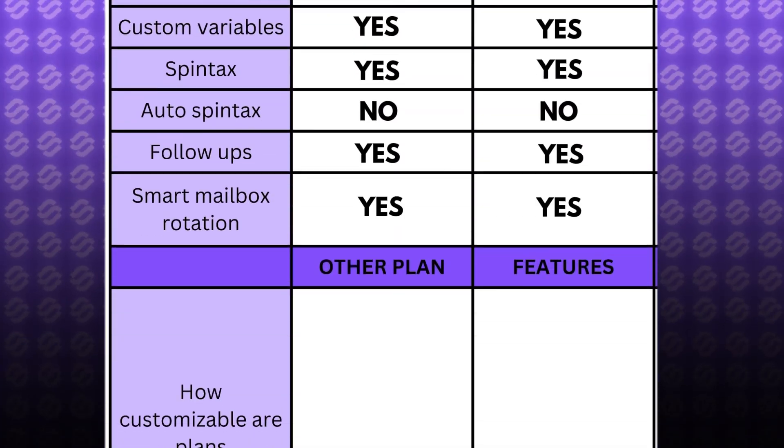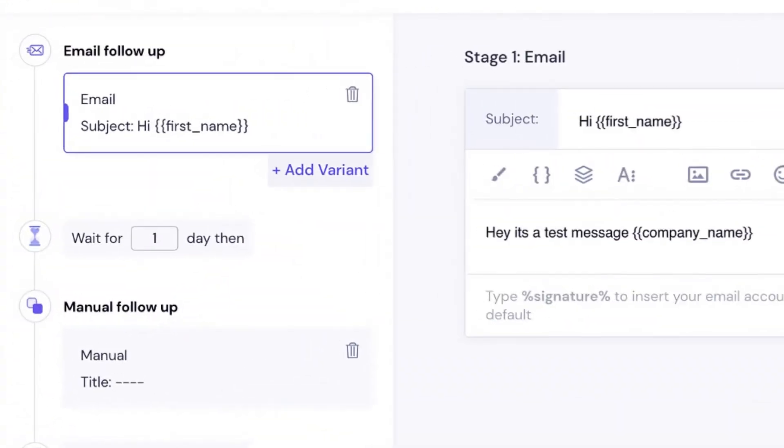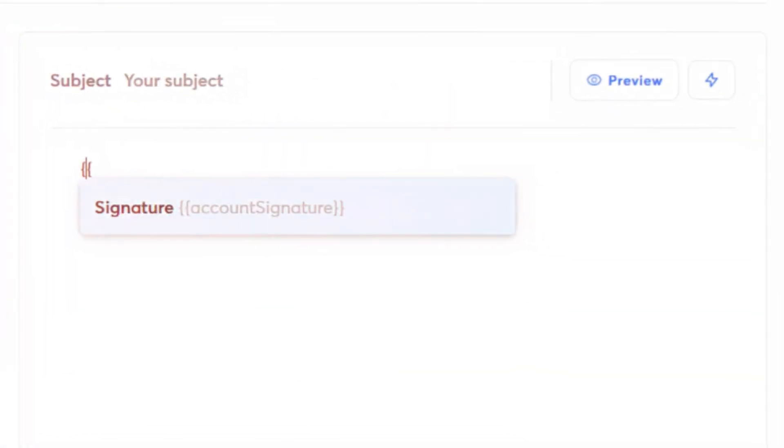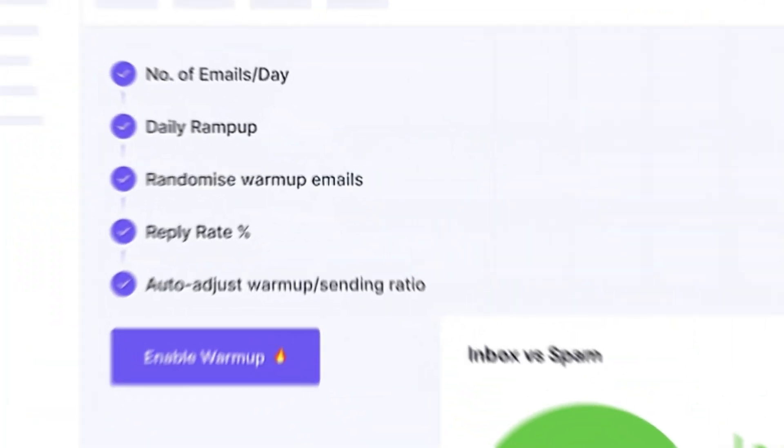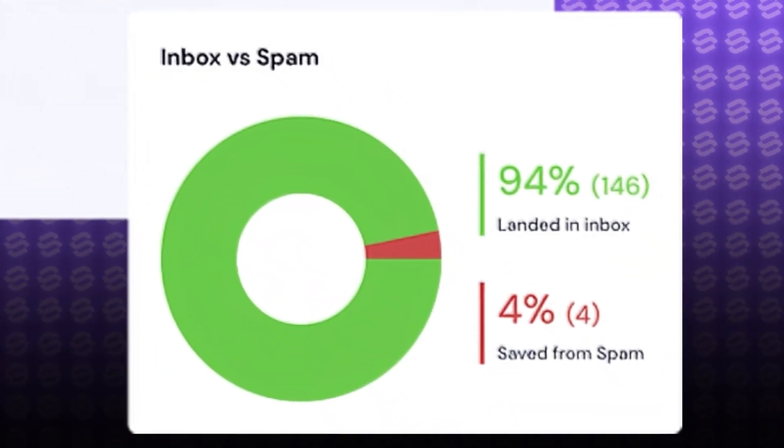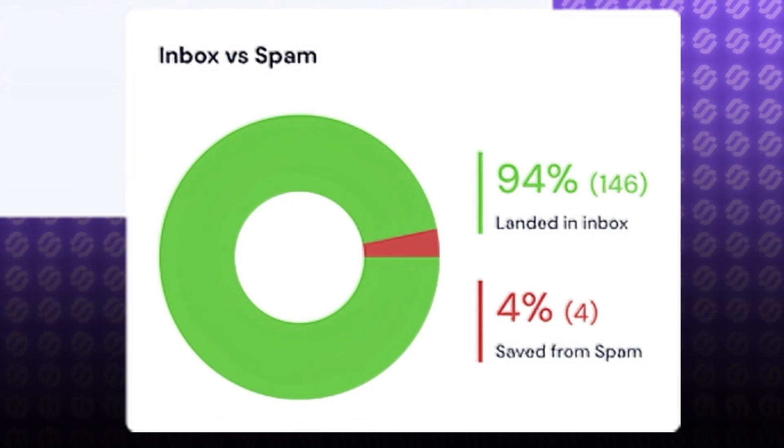Both platforms also include Smart Inbox Rotation. This means that if you want to send hundreds of emails, instead of one of your mailboxes doing all the work, those emails will be split between all the mailboxes in the sequence. This greatly increases the deliverability rate and reduces the risk of getting into a blacklist or spam folders due to high volume of emails from a single mailbox.